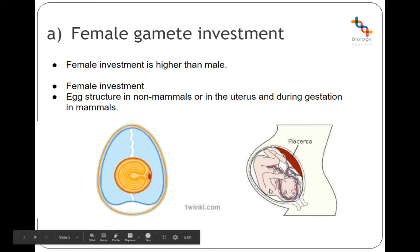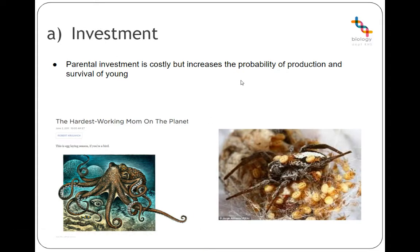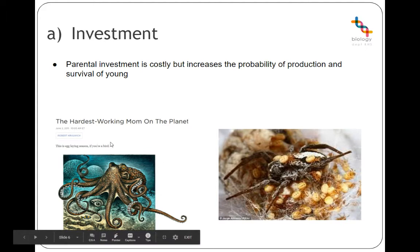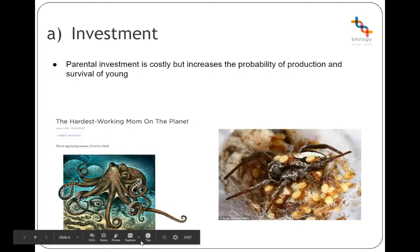Carrying the offspring slows the female down and causes physical costs. Parental investment is costly — it increases the likelihood that you'll produce an offspring and that they will survive. There's actually a species of octopus where, once the eggs are fertilised by the male, the female will stand in front of the cave where the offspring have been placed until they are old enough to hunt on their own. In the meantime, she starves to death, fighting off predators. She only has one brood in her lifetime and dies protecting them, but a lot of them survive — quite a good strategy investment-wise.